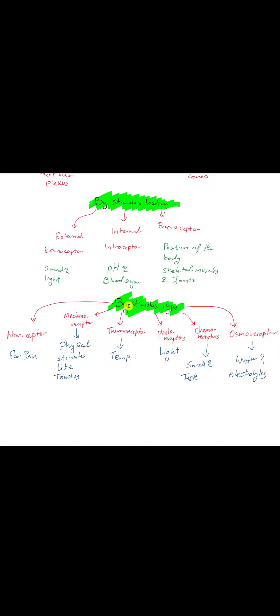The third way of receptor classification is by the stimulus type, to what they are responding. So there are the nociceptors, those are for pain, there are the mechanoreceptors, those are for physical stimulus, like touches.